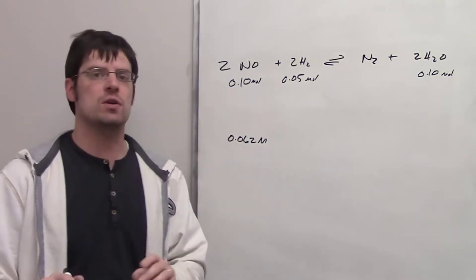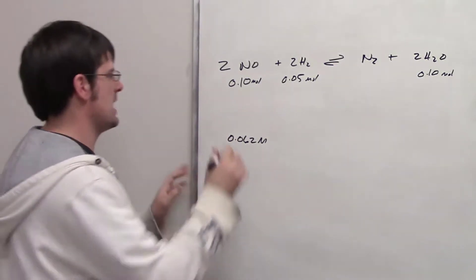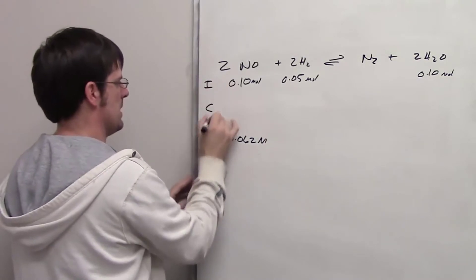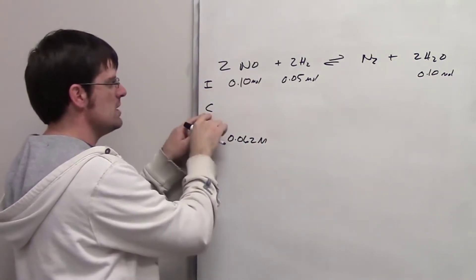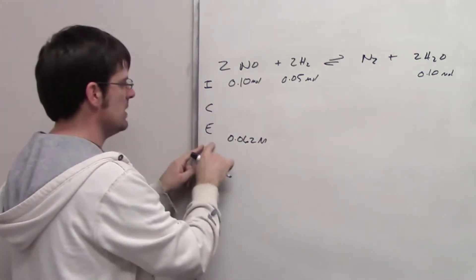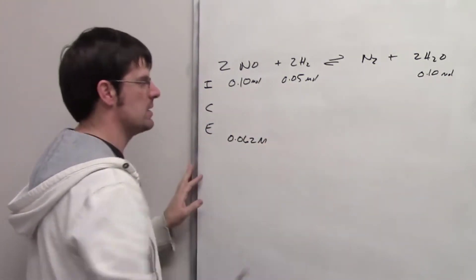The way we do this is going to require us to do an ICE table. So we'll go ahead and write ICE. Remember that I is the initial concentration, C is the change in concentrations, and E is the equilibrium concentration.